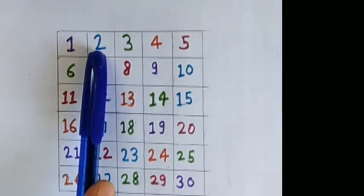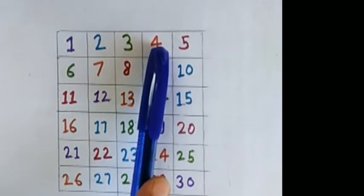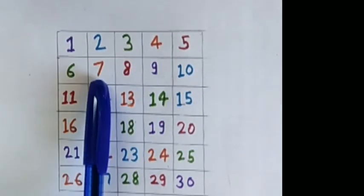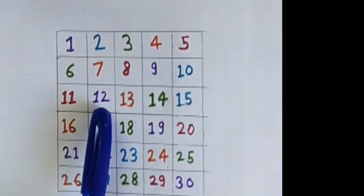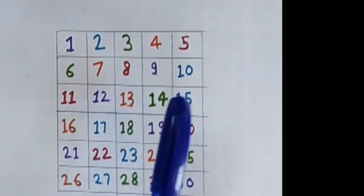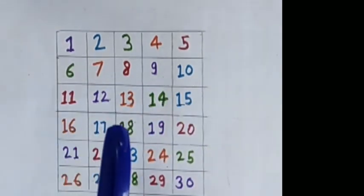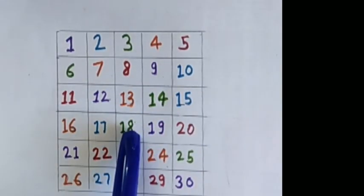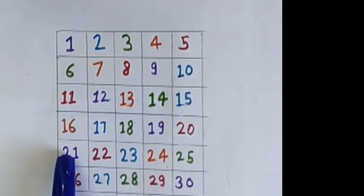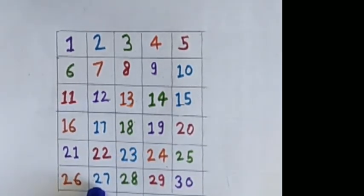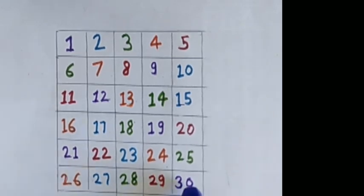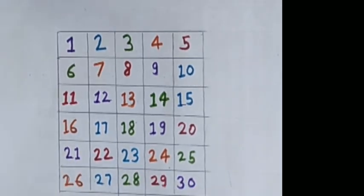Okay, let's read the numbers. 1, 2, 3, 4, 5, 6, 7, 8, 9, 10, 11, 12, 13, 14, 15, 16, 17, 18, 19, 20, 21, 22, 23, 24, 25, 26, 27, 28, 29, 30. Bye bye kids and subscribe the channel. See you in next video.